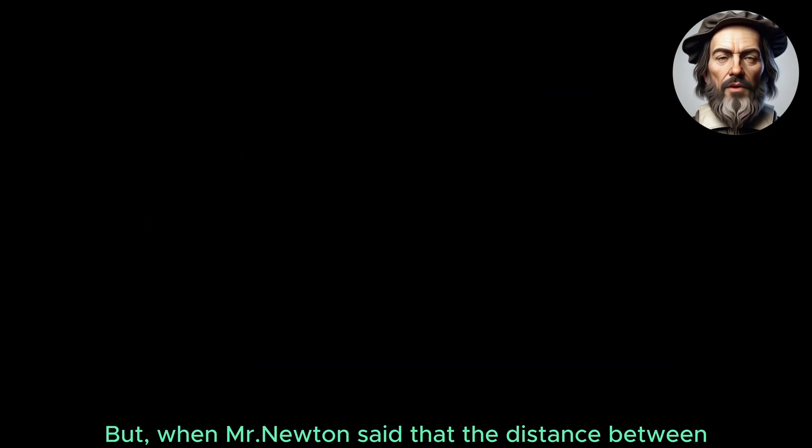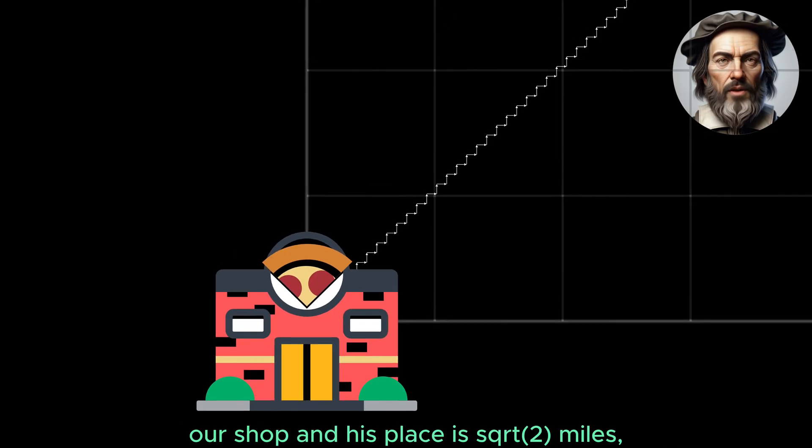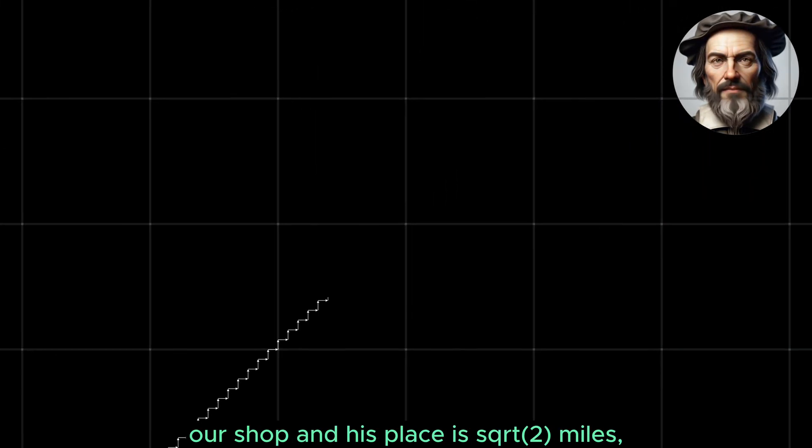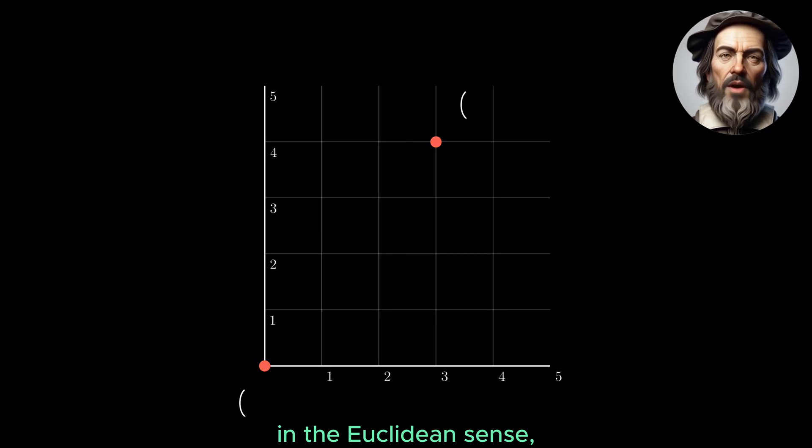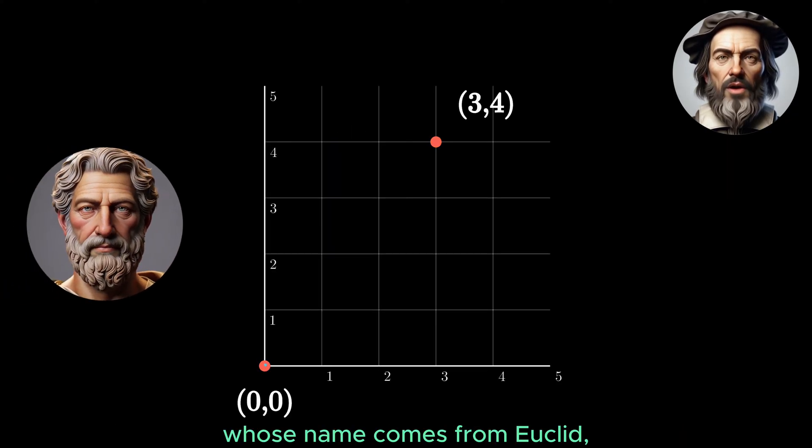But when Mr. Newton said that the distance between our shop and his place is square root of 2 miles, he means the shortest distance between two points in the Euclidean sense, whose name comes from Euclid, who also lives in this town.